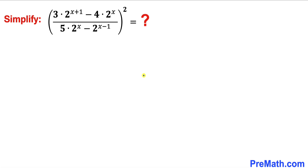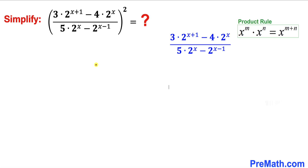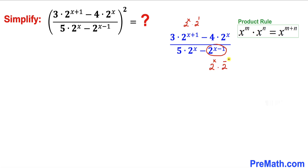Let's go ahead and get started. Let's focus on the base inside this parentheses — I have copied it down. Now let's recall the product rule of exponents. Looking at 2 power x plus 1, this could be written as 2 power x times 2 power 1. Likewise in the denominator, 2 power x minus 1 could be written as 2 power x times 2 power negative 1.